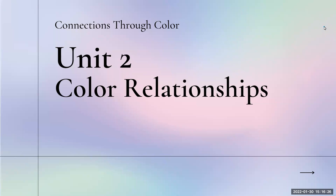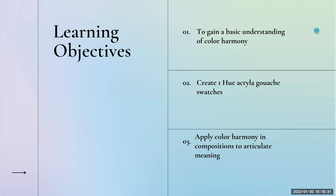Welcome to the Connections Through Color Unit 2 Color Relationships Lecture. The learning objectives for this lecture are to gain a basic understanding of color harmony, to create hue and acrylic swatches, and to apply color harmonies in compositions to articulate meaning.